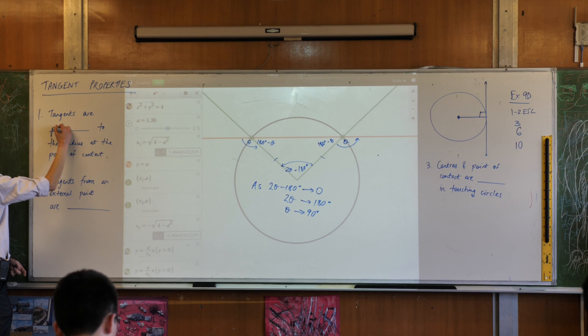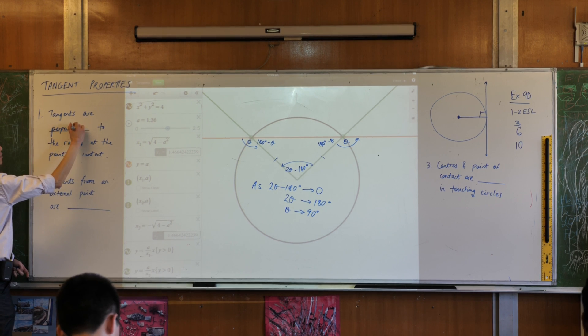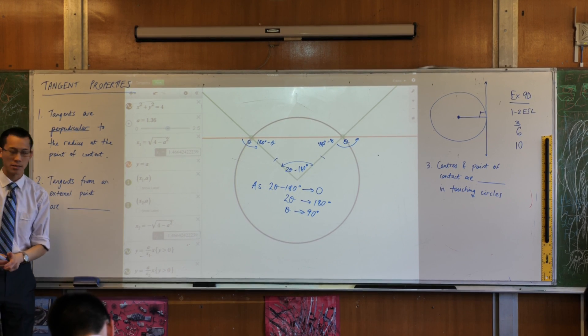So tangents are perpendicular to the radius at the point of contact, okay?